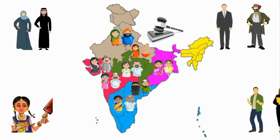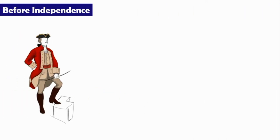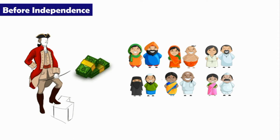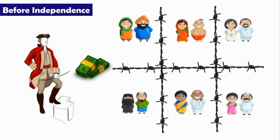If we talk about pre-independence, when there was British rule in the country, the British never wanted to interfere in the personal laws of Hindus, Muslims, and other communities. Why? Because their foremost reason was to exploit India economically, and the second reason was to play a divide and rule policy to keep Indians divided. So they had their own reasons which they pursued for their own benefits.